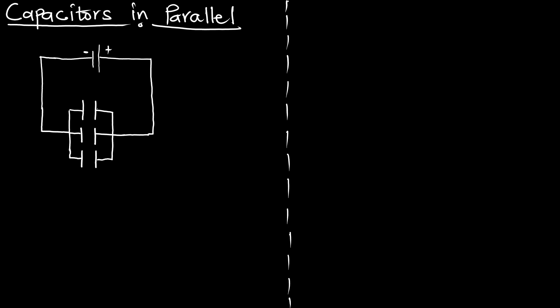Let's look at how we will calculate the capacitance of these three capacitors. Let's say we have a charge Q moving through this circuit. This charge is going to distribute itself — in capacitor one we will have Q1, in capacitor two we will call it Q2, and in capacitor three we will call it Q3. The first capacitor has capacitance C1, the second has capacitance C2, and the third has capacitance C3.